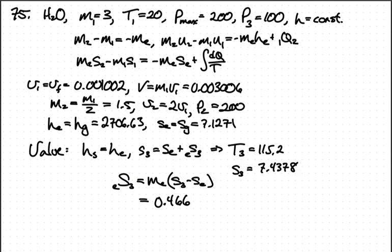Half the original mass escapes, so the mass in the pressure cooker after the relief valve has closed back down is 1.5 kilograms. This means the specific volume is twice what it was initially.